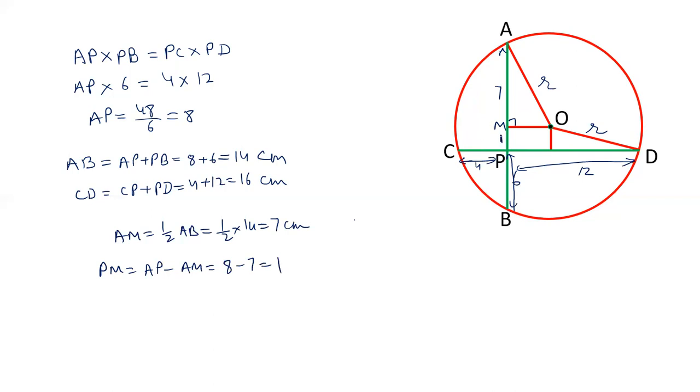So, this length is 1. PM is 1. Now, CD is 16. And let's say this is perpendicular. So, DN is equal to half of 16, that is 8. And the PN is what? PN is PD minus DN. PD is 12 and DN is 8. So, PN is 4. This length is 4, and this will be 8.